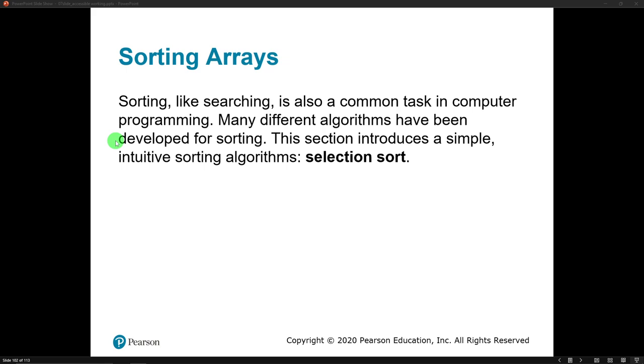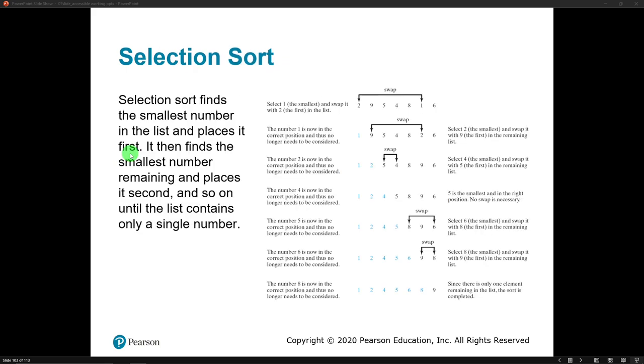So let's see how a selection sort works. We have a small group of numbers. It looks like there's seven numbers in this array: 2, 9, 5, 4, 8, 1, 6. So how does the selection sort work?